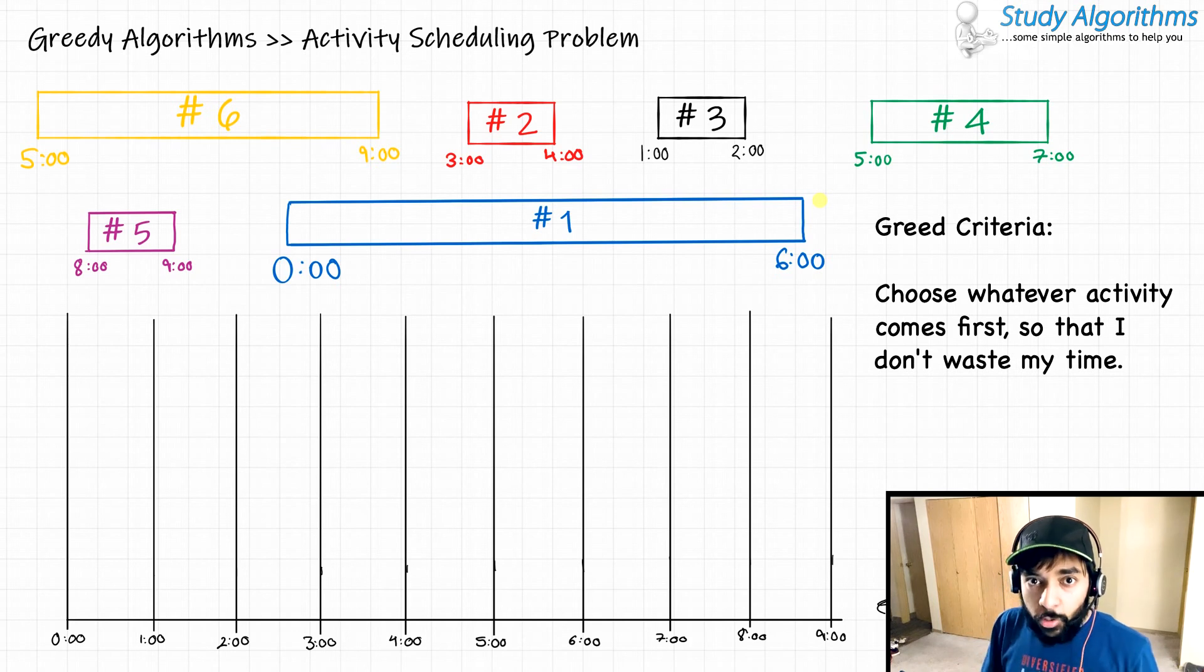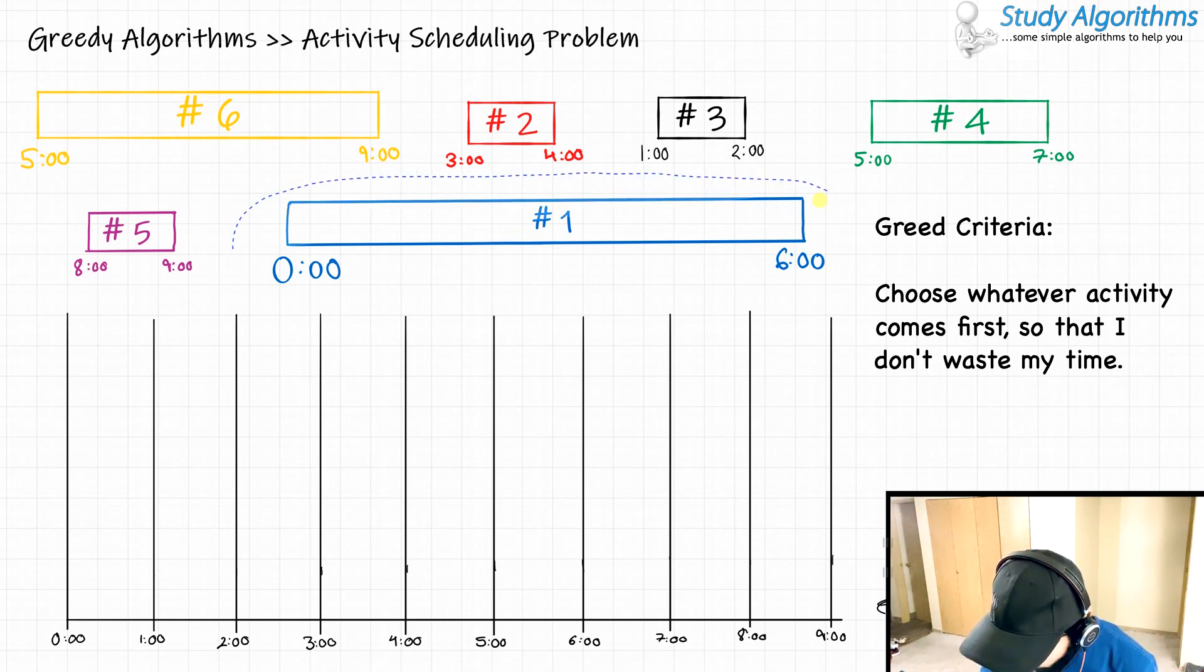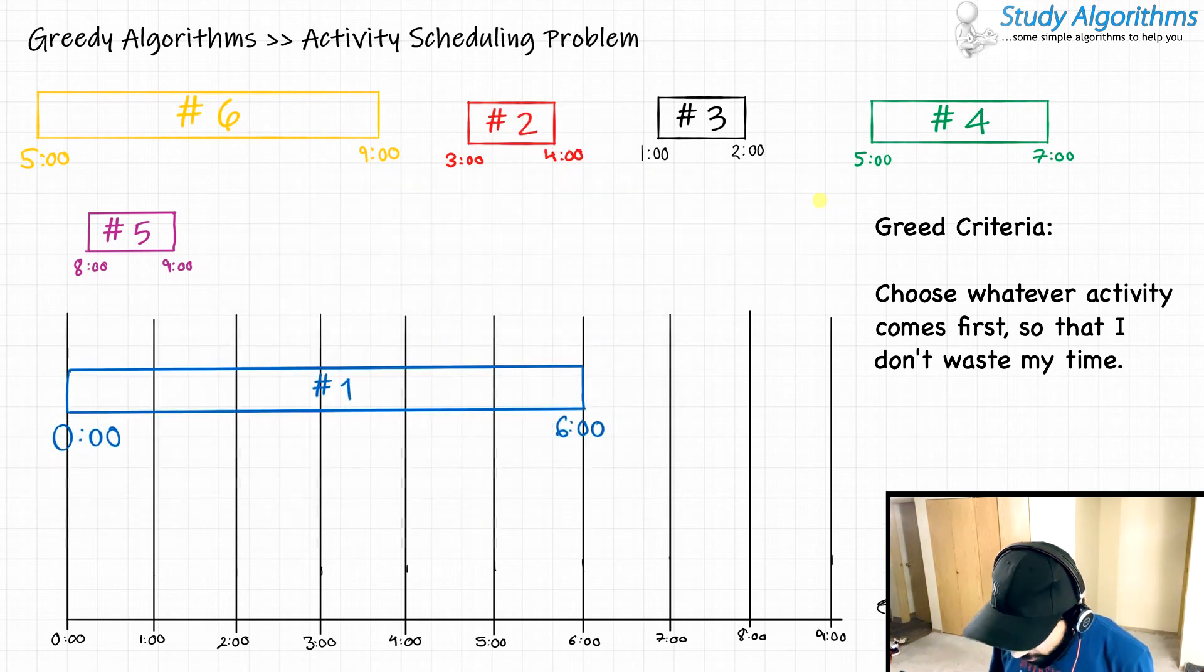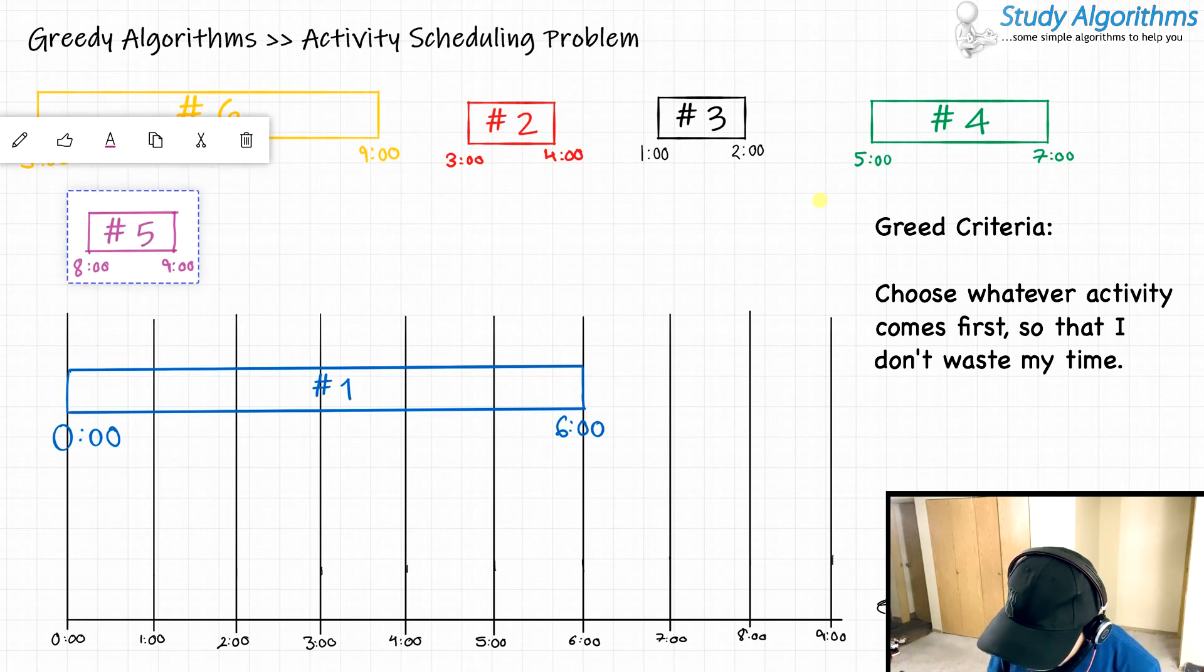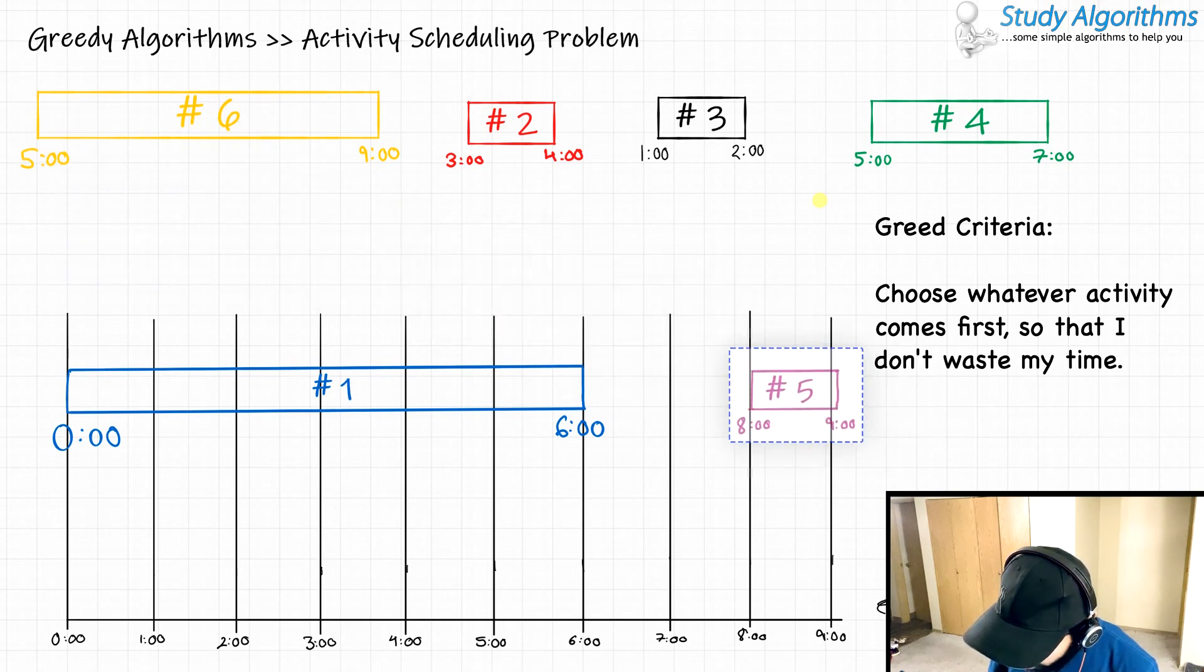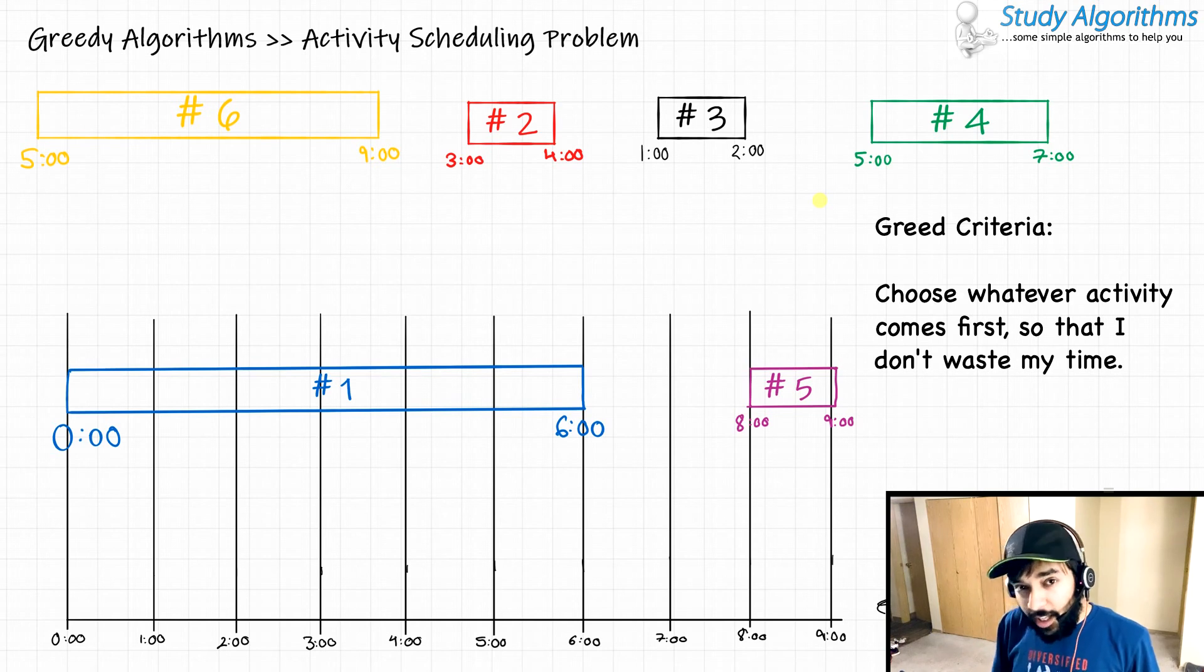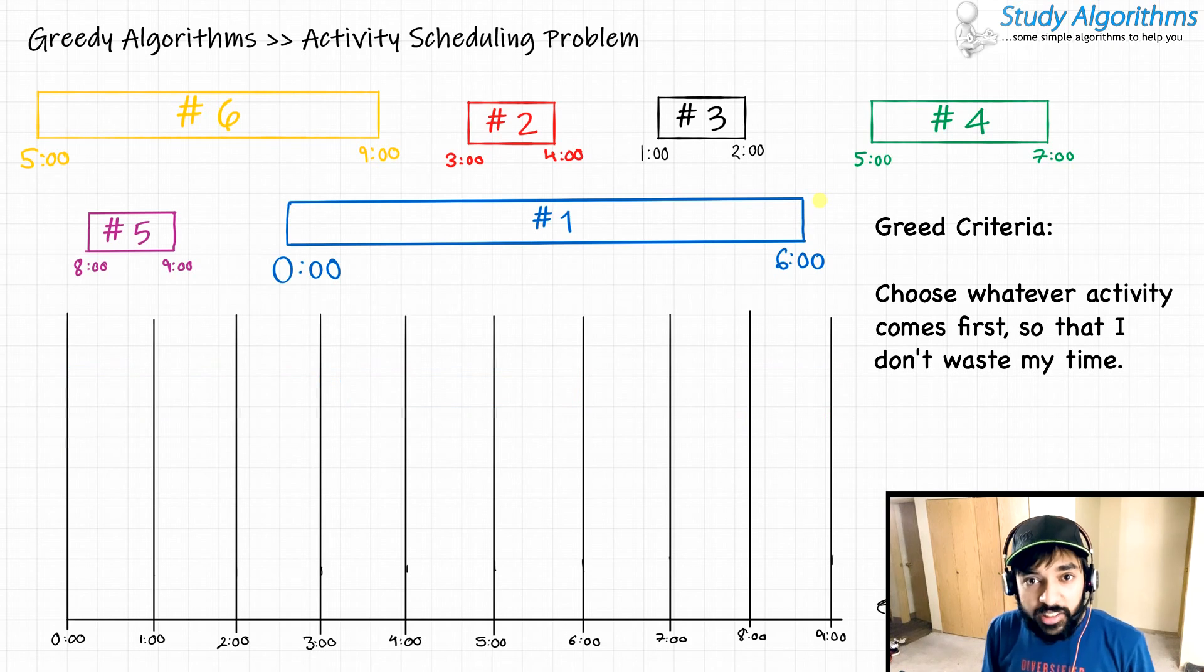How do you go about doing that? Since we are talking about greedy algorithms, we first need to determine which activity to choose at every step. One approach would be to choose an activity that starts at the earliest. If I go with this approach, I would be picking activity number 1. I put it on my schedule. Now, I cannot pick up any other activity from the range 0 hours to 6 hours. So, I am left with only one other activity, activity number 5. This gives me a total of 2 activities. But, even you might feel that this is not the optimal solution.